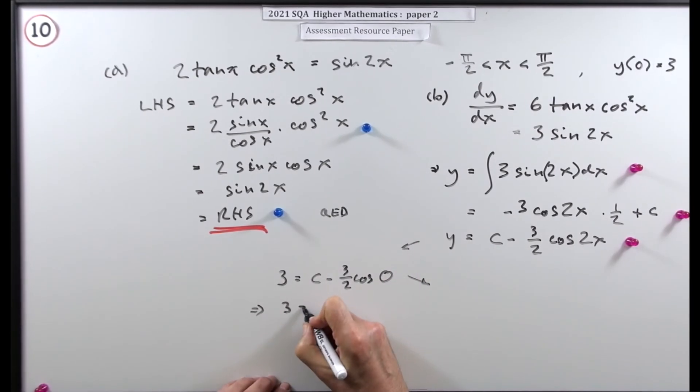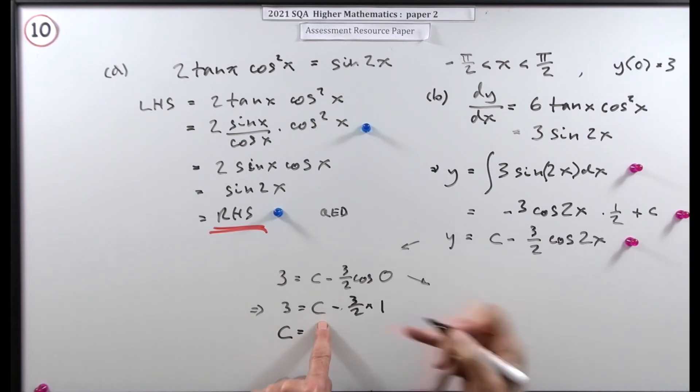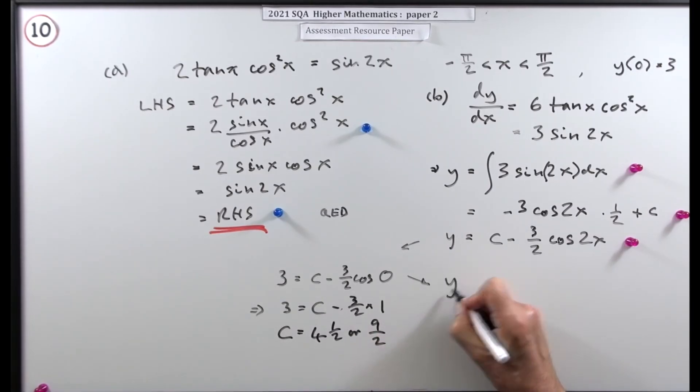So that just says 3 is equal to c minus 3 upon 2 times 1. So reading it the other way around, c will be 3 plus 3 upon 2. So that'll be 4 and a half or if you like 9 upon 2. That's not worth a mark until you've popped it back in. Now I'll just finish it off.